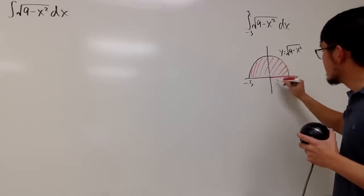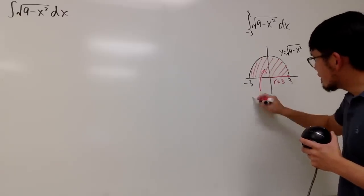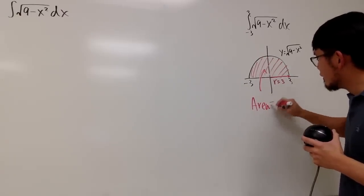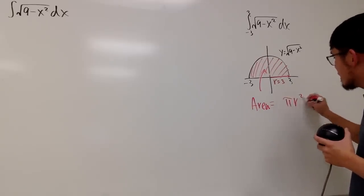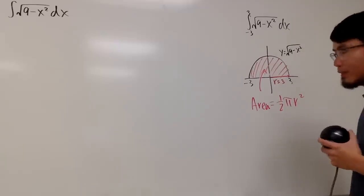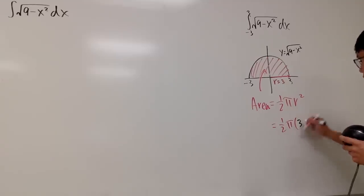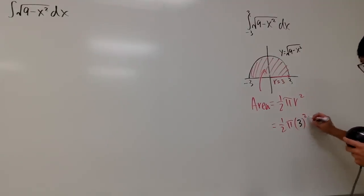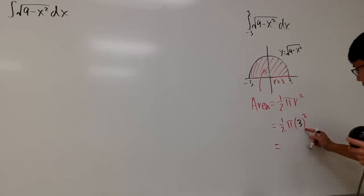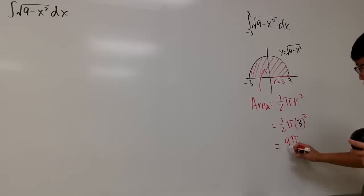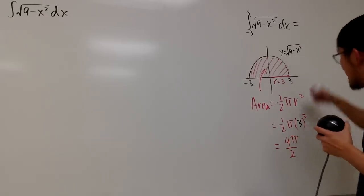The radius is 3, so the area is simple because it's just half of the circle. The whole circle is π r squared, so it's one half of that. We have one half times π times 3 squared, also divided by 2. So all in all, this is 9π over 2. The answer to this is just 9π over 2.